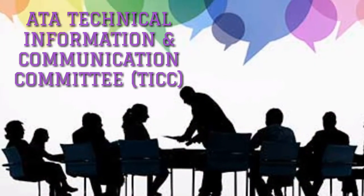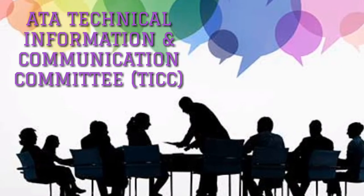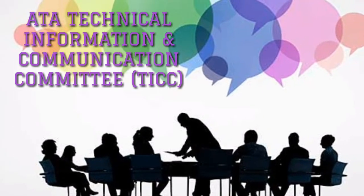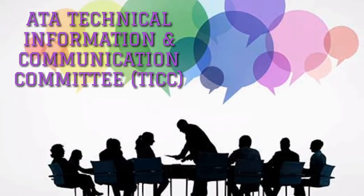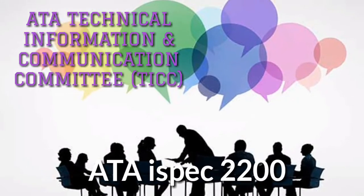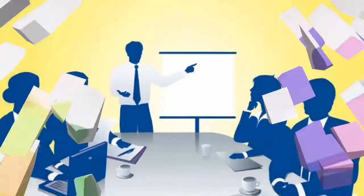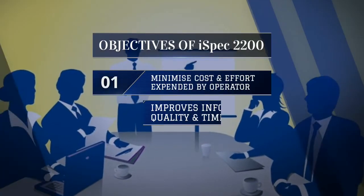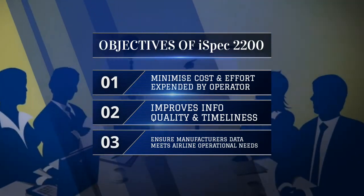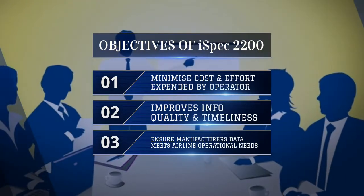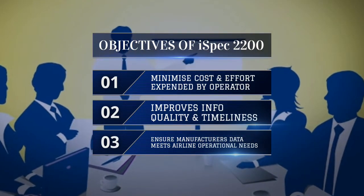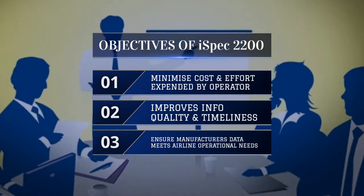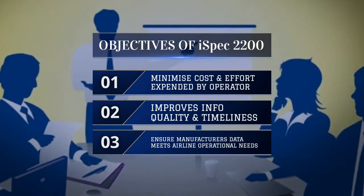In the year 2000, the ATA Technical Information and Communication Committee developed a new specification for the commercial aviation industry called ATA iSpec-2200. The objectives of iSpec-2200 are: it minimizes cost and effort expended by operators and original equipment manufacturers, improves information quality and timeliness, and ensures that manufacturers provide data that meets airline operative needs.